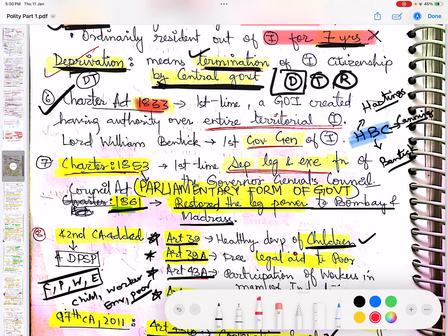Charter Act of 1833 - this was the first time when a Government of India was created having authority over the entire territory in India, and Lord William Bentinck became the first Governor General of India. This was asked this year in 2023.